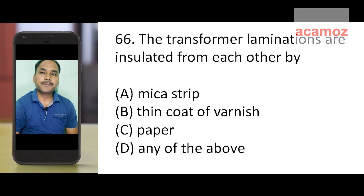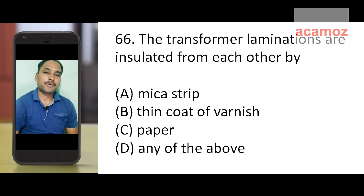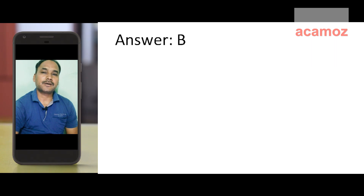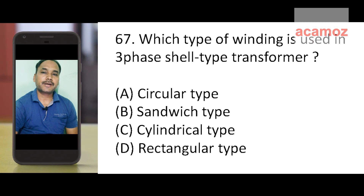Next question: the transformer laminations are insulated from each other by — mica strip, thin coat of varnish, paper, or any of the above. Transformer laminations are insulated by varnish, so option B is the correct answer.